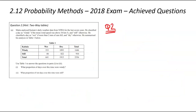We're now looking at question number two from this 2018 exam achieve questions. We've got some Kaitaia daily weather data over the last seven years. Days have been classified as windy — when the wind was above 36 kilometers per hour — and still if below that. He's also classified days as wet if there's more than two millimeters of rain, and dry if there's less. He's summarized all his results in a two-way table.